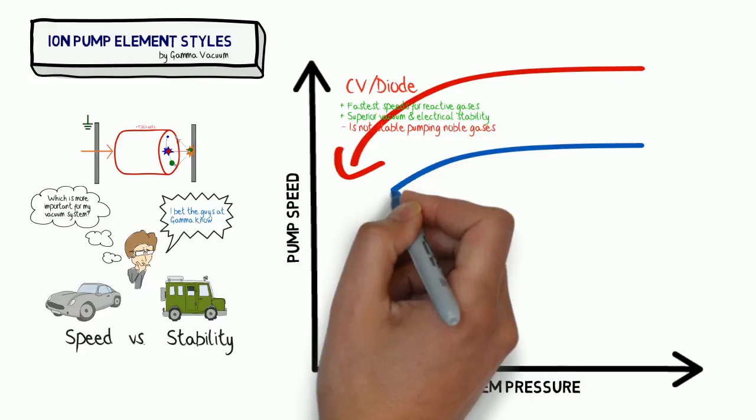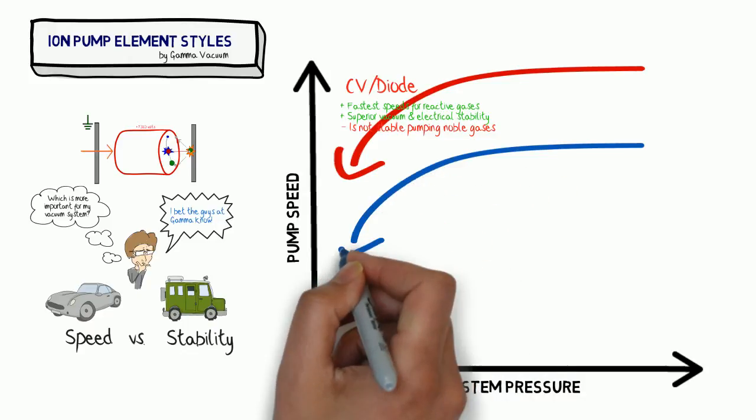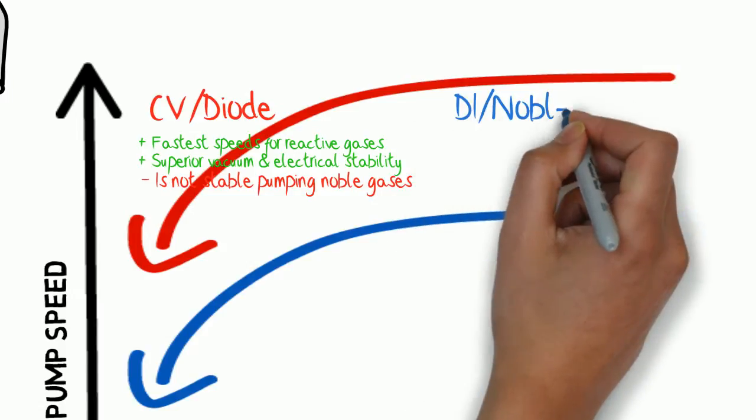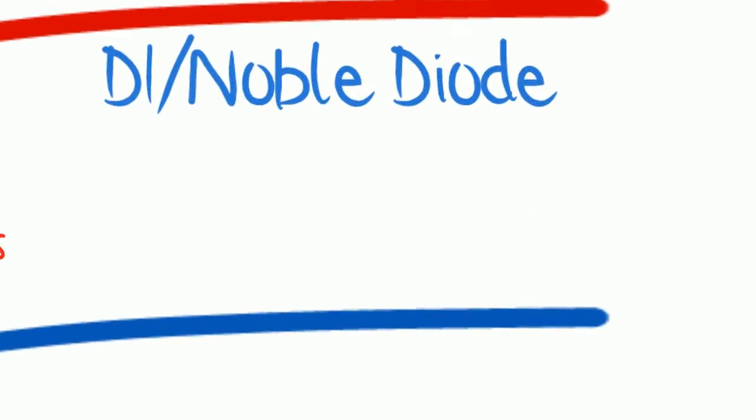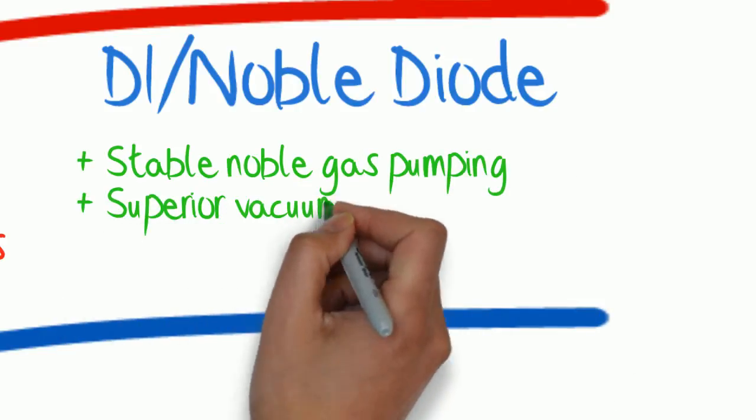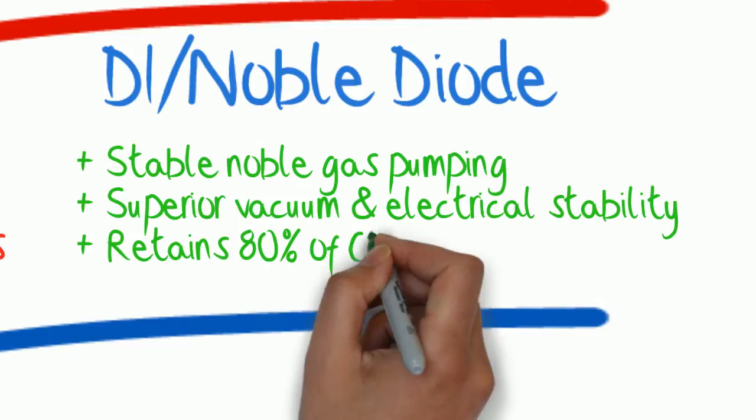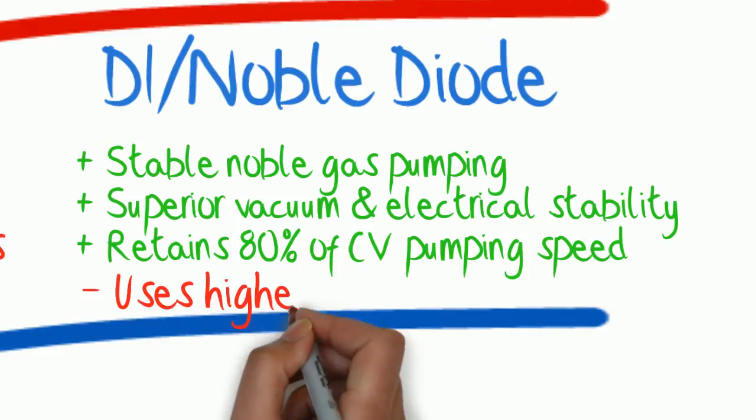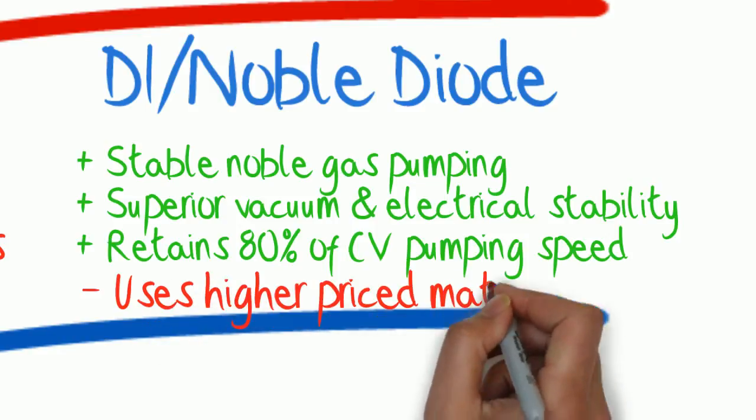So, the DI, or noble diode, was created to address that problem. The advantage of that is we do get long-term stability for noble gases. We still maintain our superior vacuum and electrical stability, and we retain about 80% of our CV pumping speed for reactive gases. Unfortunately, they do use a little bit higher-priced material.